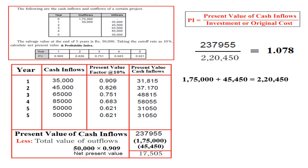Since this is an independent project and the PI is greater than one, we can accept the project. The NPV is also positive, so we can accept the project under both methods. If it were a mutually exclusive project, we would compare PI values across projects and accept whichever gives the highest PI. This is the basic and simplest way to calculate the profitability index.